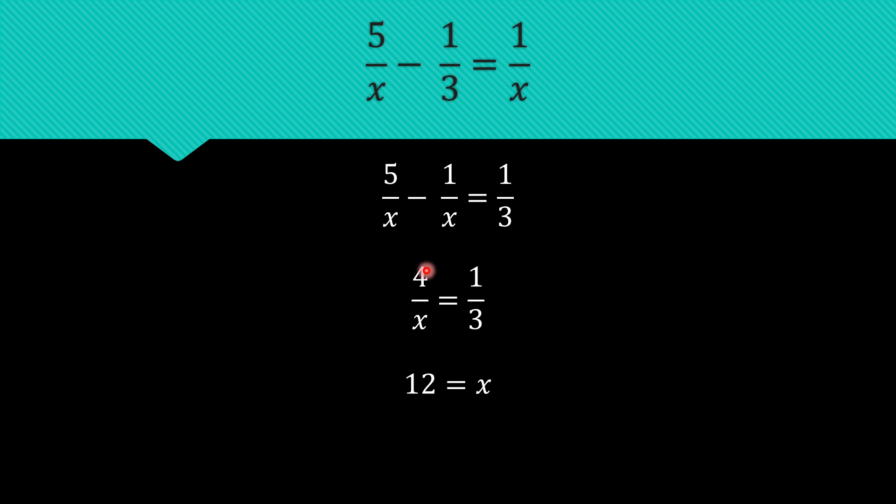So what we get, 4 times 3 equals 12, x times 1 equals x. So rearranging, we have 12 as the value of x.